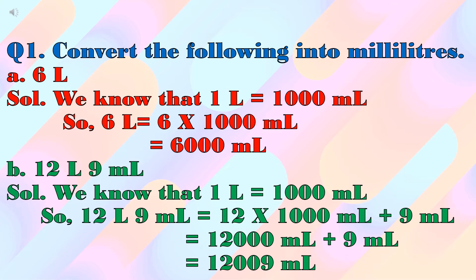Six liters will be equal to six multiplied by one thousand milliliters, that is equal to six thousand milliliters. Part B is twelve liters nine milliliters. We know that one liter is equal to one thousand milliliters, so twelve liters and nine milliliters will be equal to twelve multiplied by one thousand milliliters, plus nine milliliters, which is equal to twelve thousand nine milliliters.